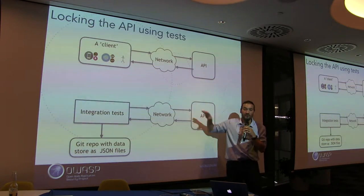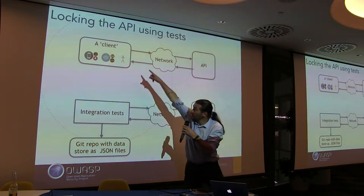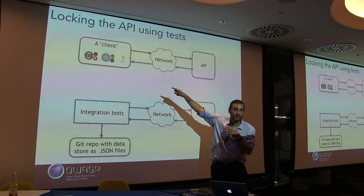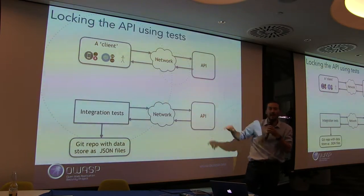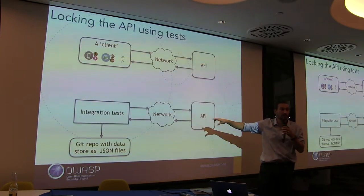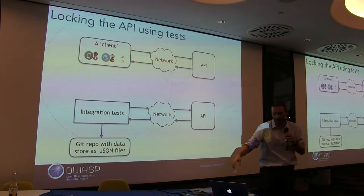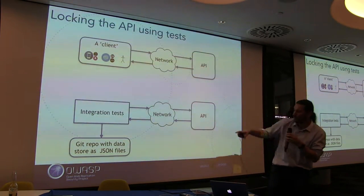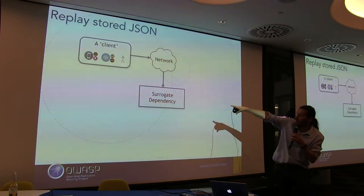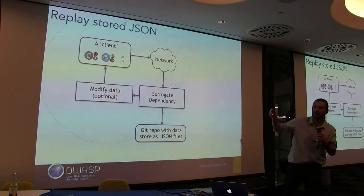JSON is a great format to store — it's easy to refresh, easy to understand, easy to diff. Very few teams have this. What you're doing is telling the client exactly what they use, and telling the server exactly how it is used. Very few people who develop APIs have any idea how their APIs are actually used — this gives you that on a plate. What you then do with those JSON files is run the same client but instead of going to the network, you go to the surrogate dependency, hit the Git repo, optionally modify the data, and give it back to the client running offline.